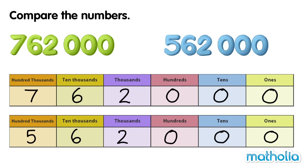Now we compare the digits in each place starting at the highest place value. Let's compare the digits in the hundred thousands place. 7 is greater than 5, so 762,000 is greater than 562,000. 562,000 is smaller than 762,000.